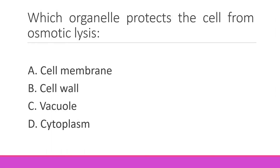Which structure protects the cell from osmotic lysis? The right option is cell wall. Cell wall was also discovered by Robert Hooke.